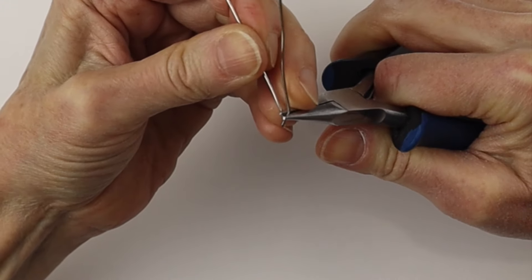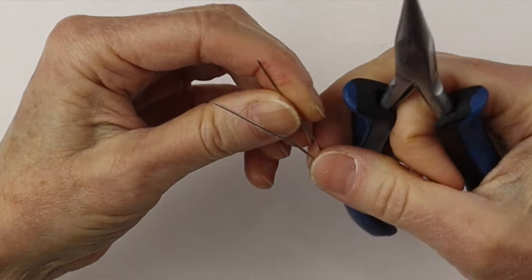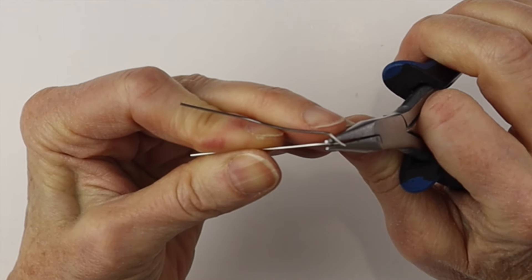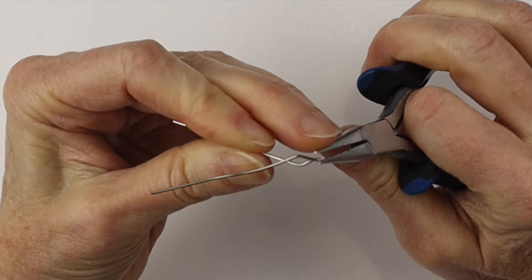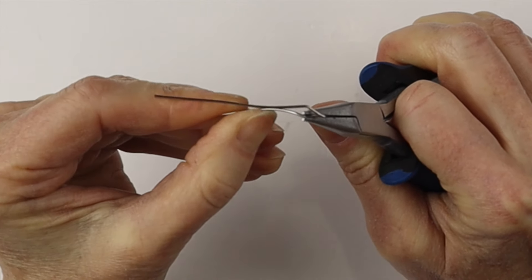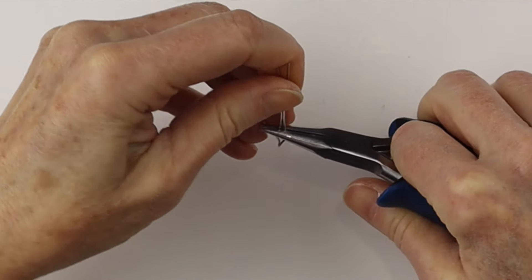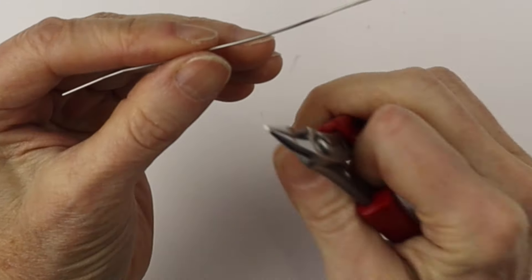We're going to bend it in at about a quarter inch, flip it around and do the same on the other side. A little sharp bend to make the point and curve it around with your thumb. So press it down a little bit.